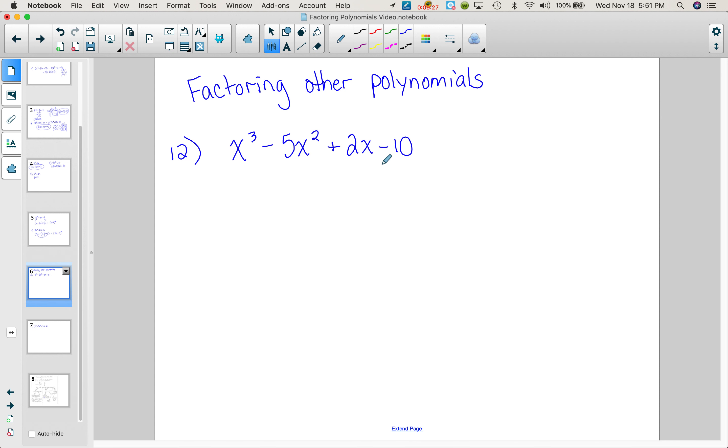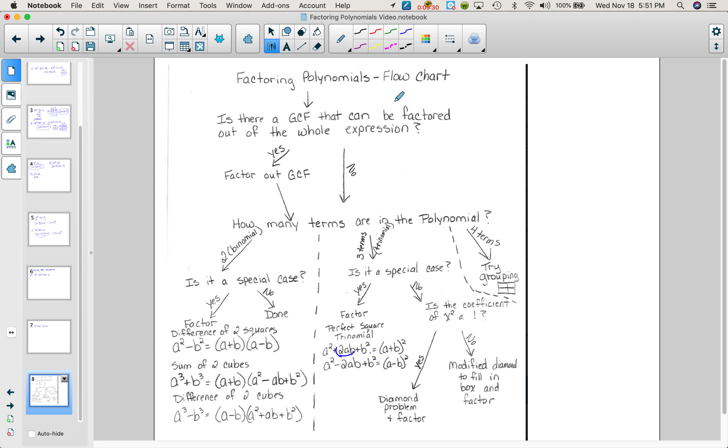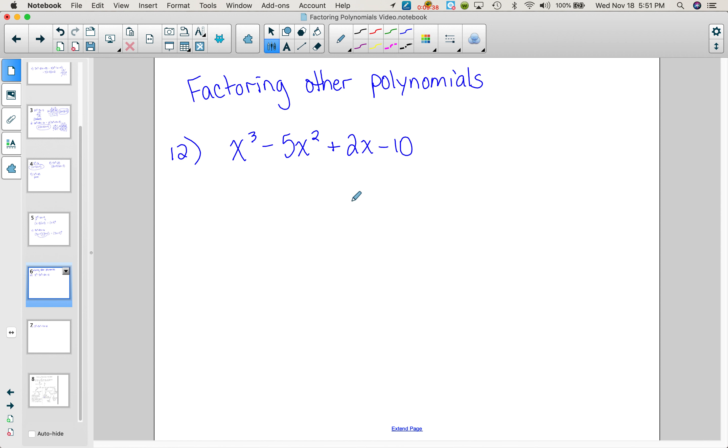Next problem, this one has 4, so what's that, what's our chart say about that? If you get to the how many terms are in the polynomial, 4 terms, try grouping, and I even drew a little picture of a box there for you. So we're going to make a box, put one term in each box, the constant's going to go down here, the highest power goes here. Common factor out the top row, we get an x squared, which makes this an x, which makes this a minus 5, which makes this a plus 2, so we get x squared plus 2 times x minus 5.